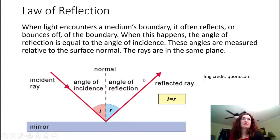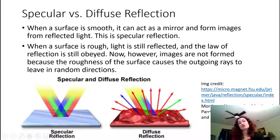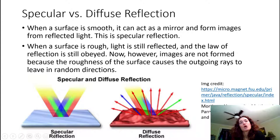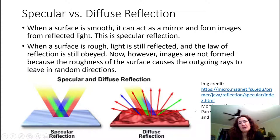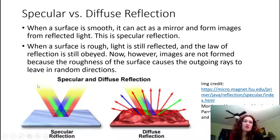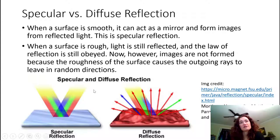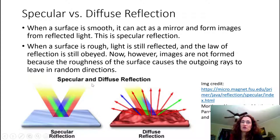To sum up: the law of reflection states that angle of incidence equals angle of reflection. Now this is always true, but it doesn't always make a pretty image. When you have a really smooth object, like a mirror or a shiny metal, you can get what's called specular reflection. When you have specular reflection, light rays coming in parallel to one another will also be parallel after they reflect off the surface.